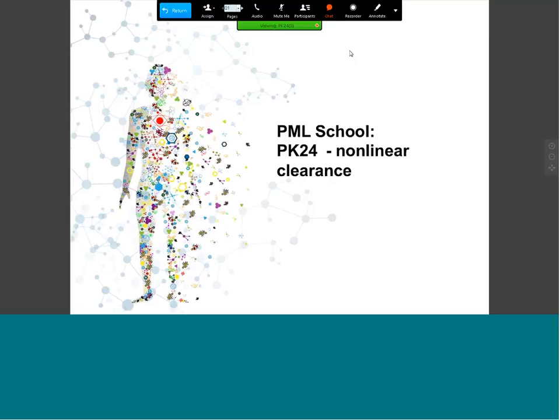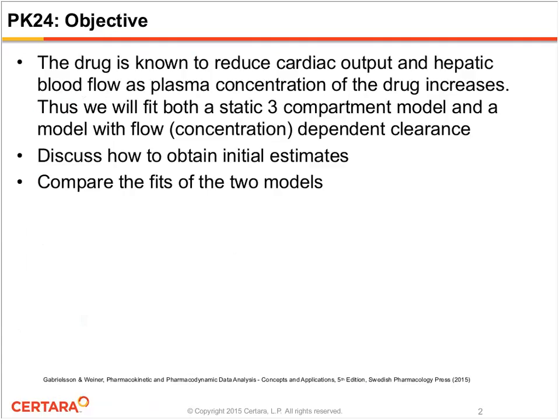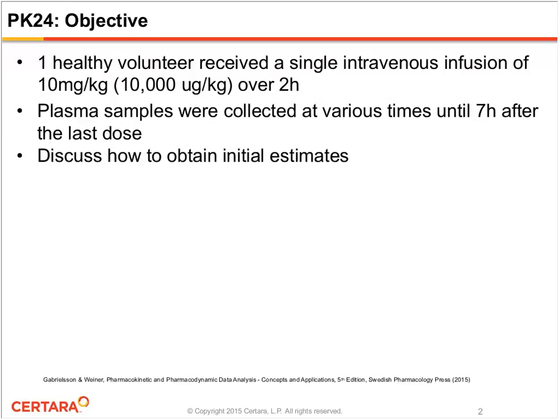All right, thanks. So the example that I'm going to cover for you today is one that is in the textbook that Johan and I did. This is PK24. In this situation, we're going to use a three-compartment model to model data, but the wrinkle in this particular exercise is that we're going to assume that the clearance of the drug is nonlinear. So we'll talk about how to implement that using the PML code. In this particular instance, the drug is known to reduce the cardiac output and also hepatic blood flow, and that's the rationale behind the nonlinear clearance. But as part of the exercise, we will fit both a static three-compartment model where clearance is static, as well as a model where clearance is flow or concentration dependent. And we'll briefly talk about how to obtain initial estimates, and then we'll compare fits of the models.